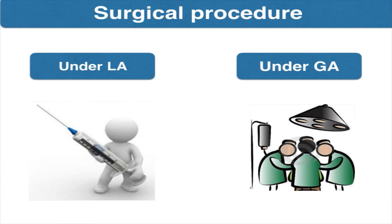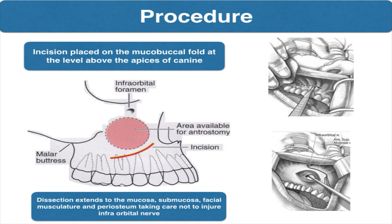The procedure can either be done under local anesthesia or under general anesthesia. An incision is placed on the mucobuccal fold at the level above the apices of the canine, extending from the canine till the second molar region. The dissection is extended through the mucosa, submucosa, the facial musculature and periosteum, taking care not to injure the infraorbital nerve.